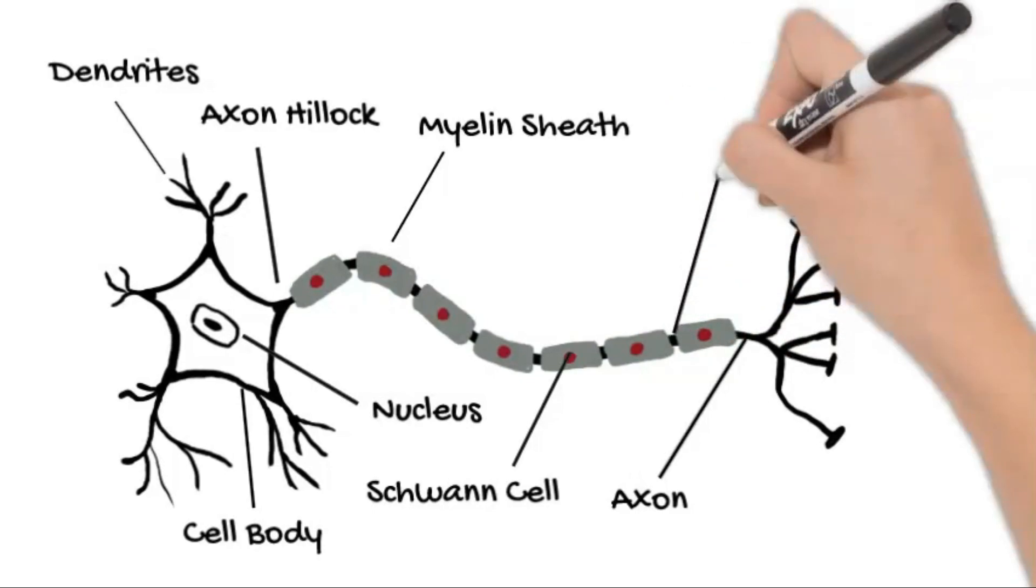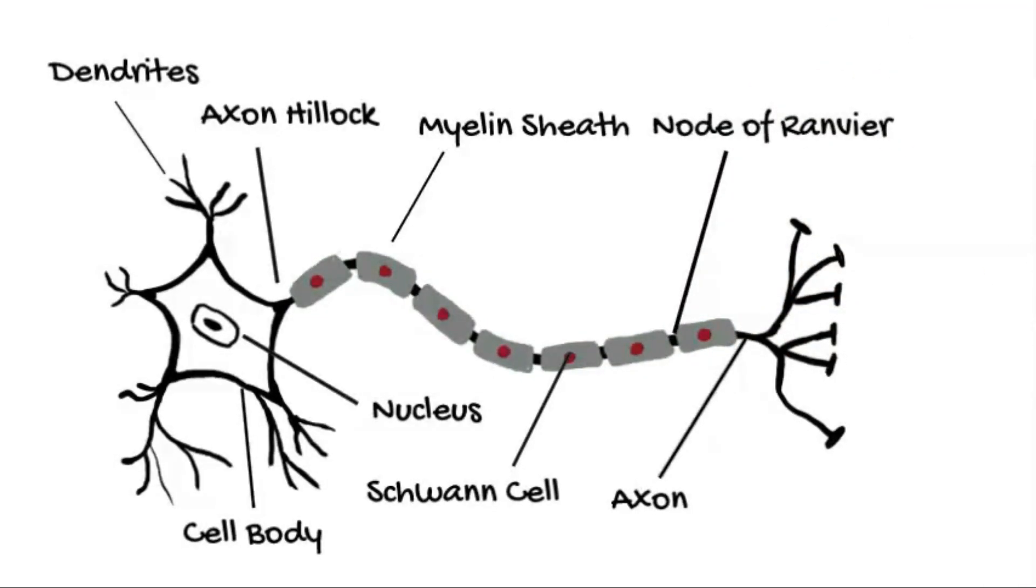The nodes of Ranvier break up this insulation of the axon at intervals. This interruption in the myelin forces the electrical impulses to jump from one bit of insulated axon to another, catapulting the signal down the axon.